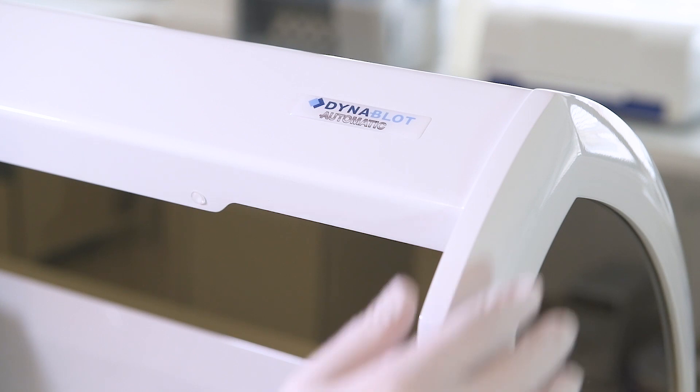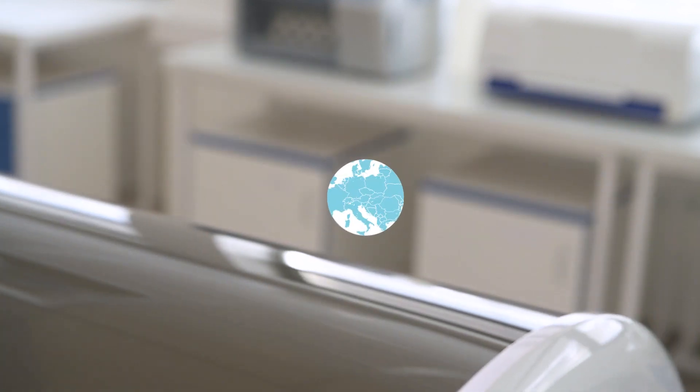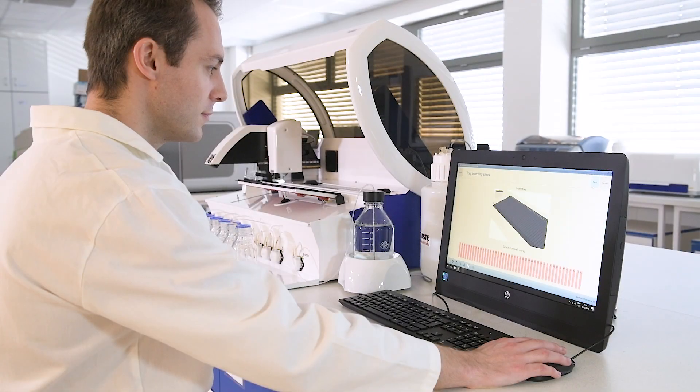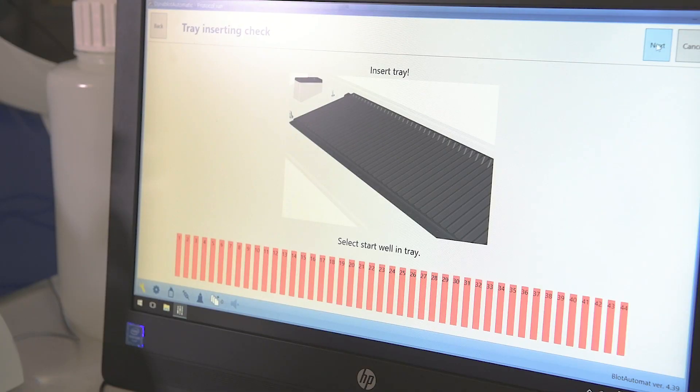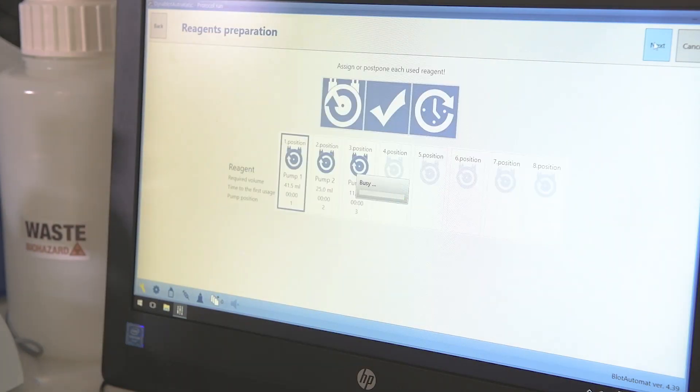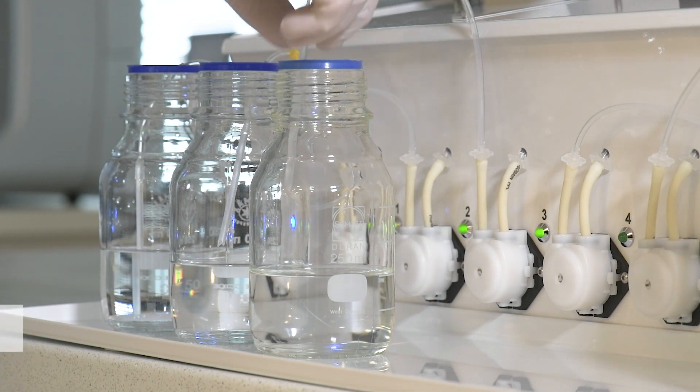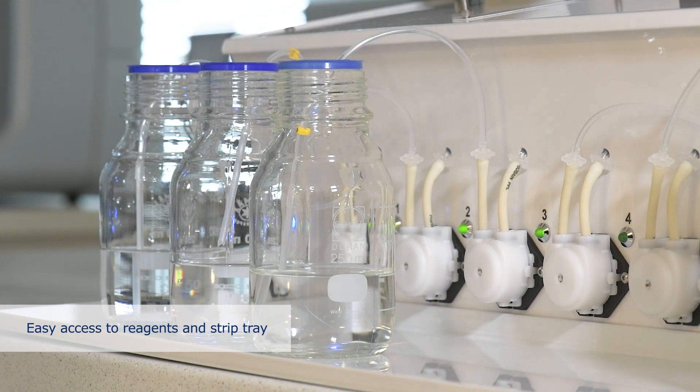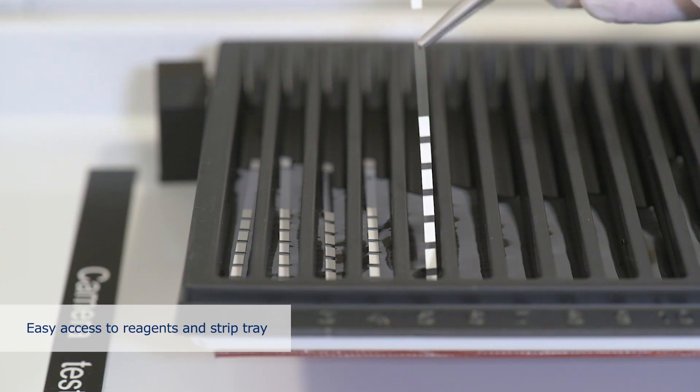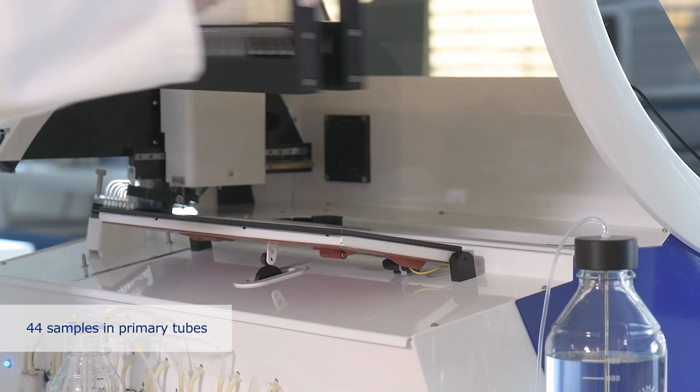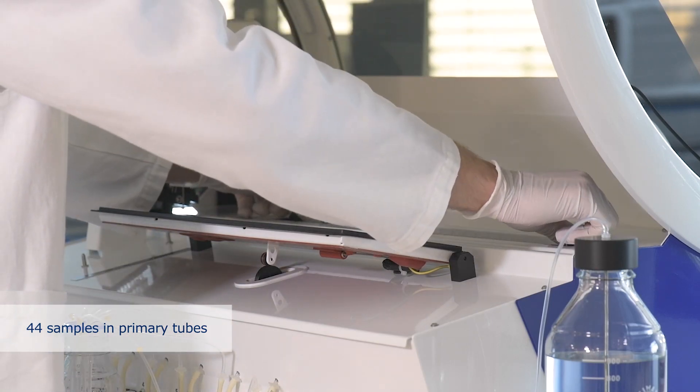The European origin and our passion assure the highest quality and reliability. The intuitive software guides the user through the short priming and loading procedure. When designing DynaBlot Automatic, we've put great emphasis on easy accessibility of the reagent bottles and strip tray. The sample rack is removable and allows a comfortable way of loading in primary tubes.